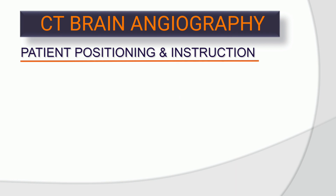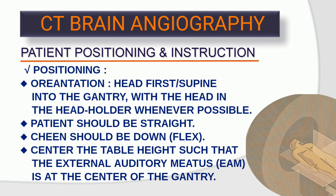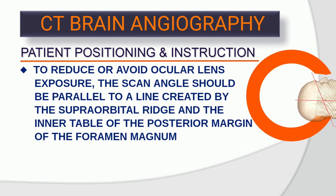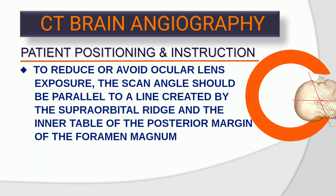Patient positioning and instruction. Positioning — orientation: head first, supine into the gantry with the head in the head holder whenever possible. Patient should be straight; chin should be down in a flexed position. Center the table height such that the external auditory meatus (EAM) is at the center of the gantry. To reduce or avoid ocular lens exposure, the scan angle should be parallel to a line created by the supraorbital ridge and the inner table of the posterior margin of the foramen magnum.